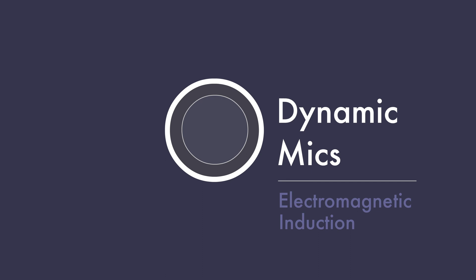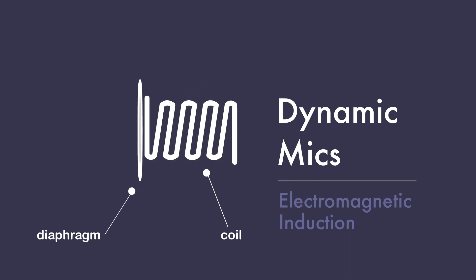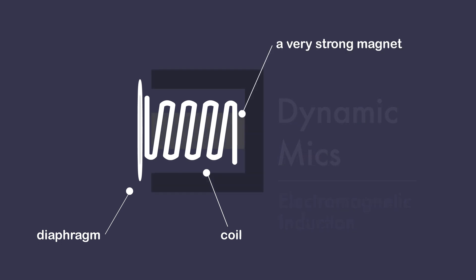Now that might sound complicated, but all it means is that the diaphragm of a microphone is attached to a coil of wire, and that coil is placed inside the magnetic field of a very strong magnet.